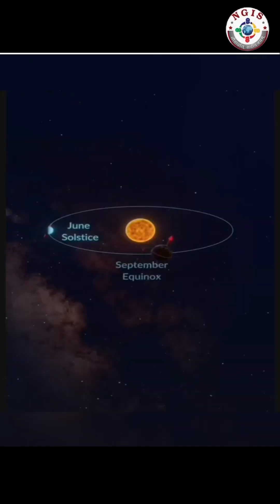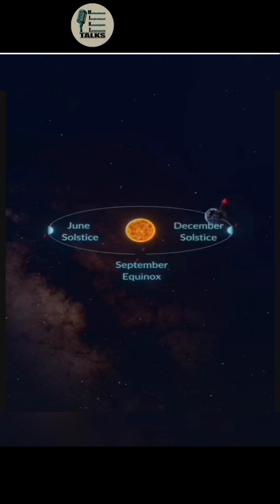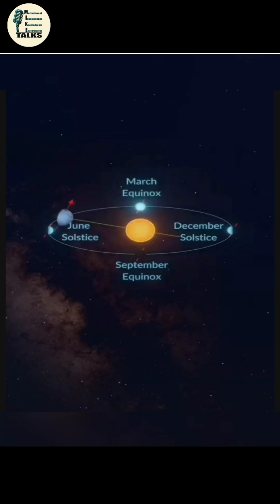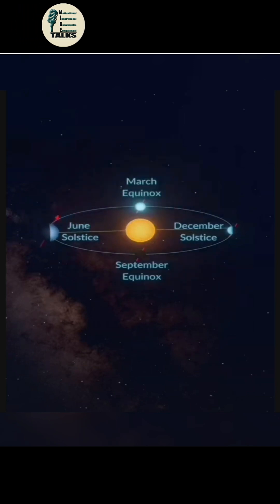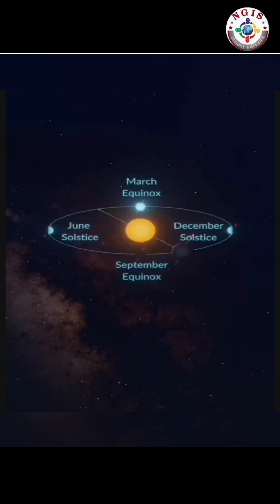Equinoxes: When the Earth's axis is tilted neither towards nor away from the Sun, day and night are roughly equal in length across the globe.